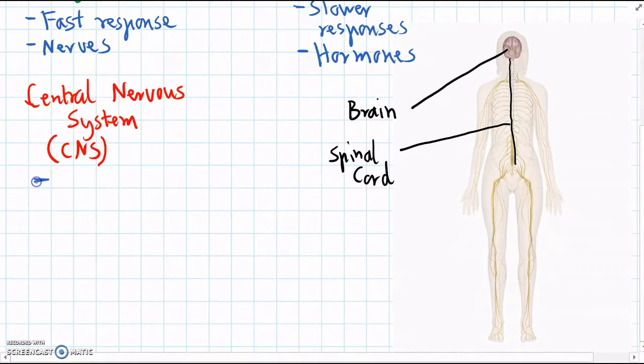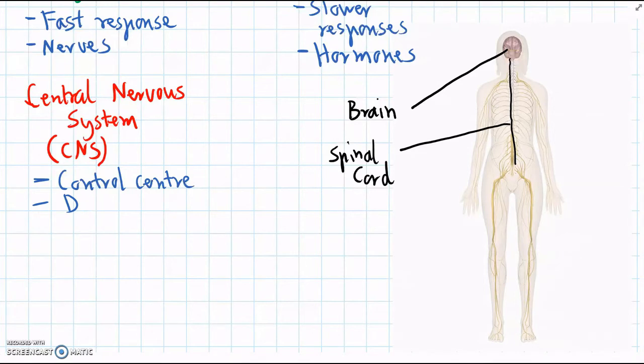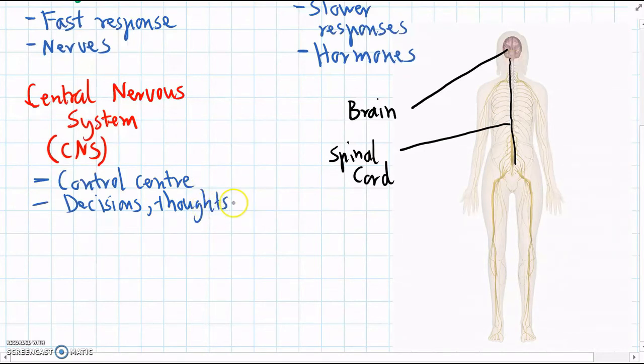The main job of the central nervous system is it's the control center for the whole animal. So it's involved in making decisions. Whenever we think something, we're using our central nervous system. So decisions and thoughts and memories as well.